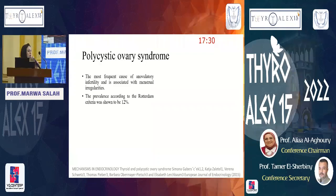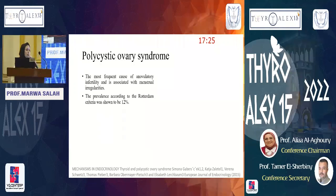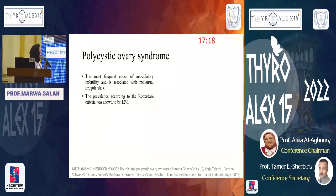Polycystic ovary syndrome is another common endocrine problem affecting females of reproductive age, where prevalence may reach 12 to 18 percent of the population. It is considered the most frequent cause of anovulatory infertility, associated with menstrual irregularities.